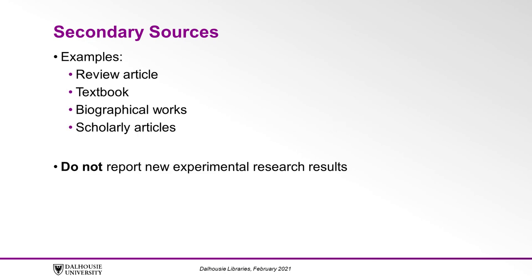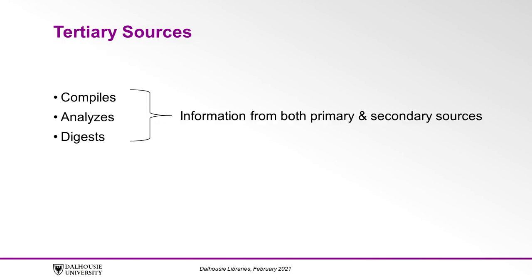A secondary source often takes the form of a review article, a textbook, biographical works, or scholarly articles that do not report new experimental research results. A tertiary source compiles, analyzes, and digests information from both primary and secondary sources.